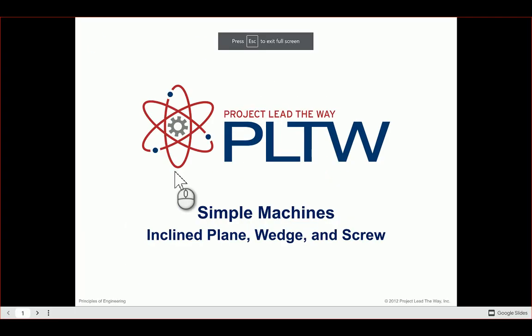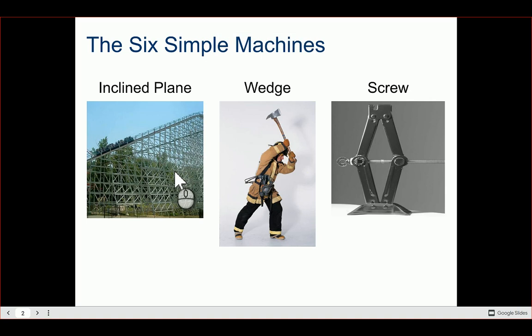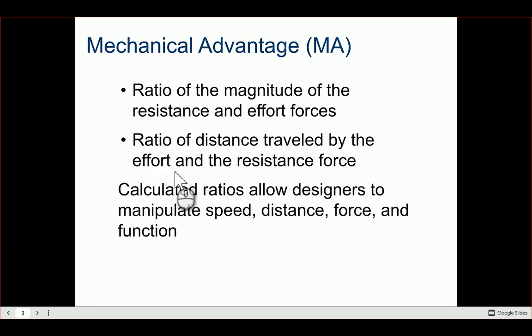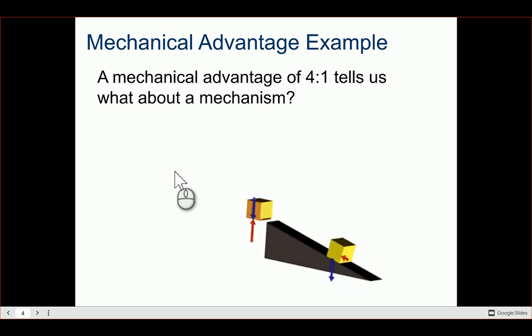In this presentation we're going to focus on just those three. These are going to have a lot of the same principles as the simple machines we've already looked at — dealing with mechanical advantage, the ratio of magnitude of resistance and effort forces, as well as the distances. These ratios allow designers to determine what kind of speed, distance, and force function our simple machines have.